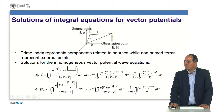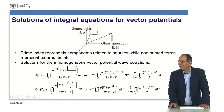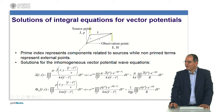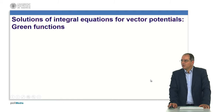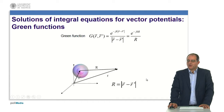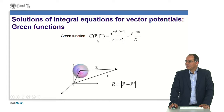If I remove the dependence on the difference between the vector of the observation point and the vector of the source point, I can write these two expressions where the vector potential is given by mu over 4pi times the 3D integral of the current density multiplied by a Green's function, and the scalar potential is 1 over 4pi epsilon times the 3D integral of the charge density multiplied by the same function. The functions I am making use of can be denoted as Green's functions, and this Green's function is given by the expression shown here.